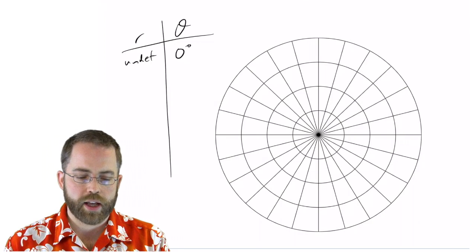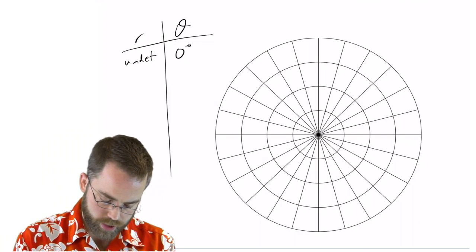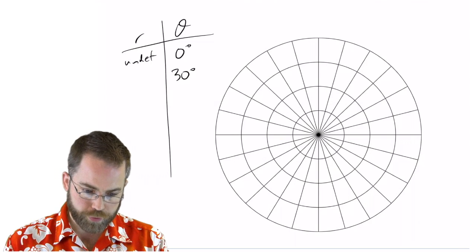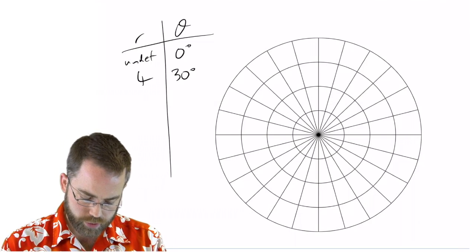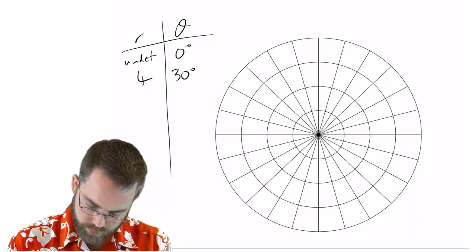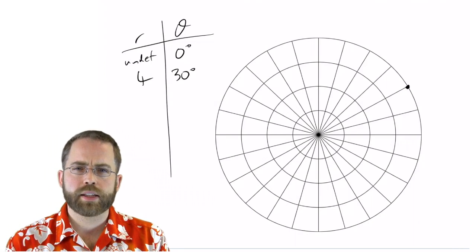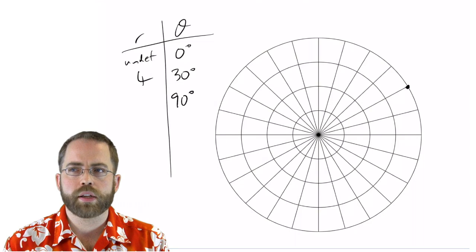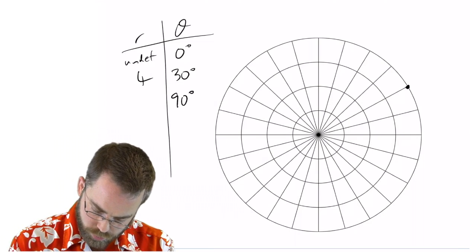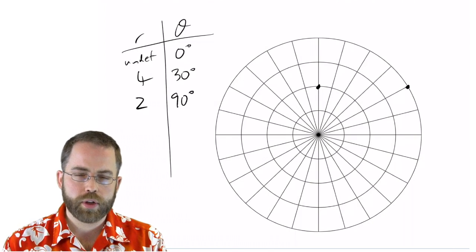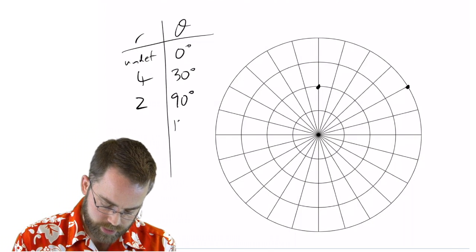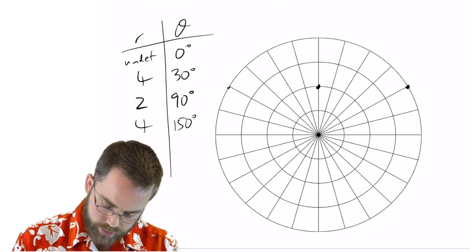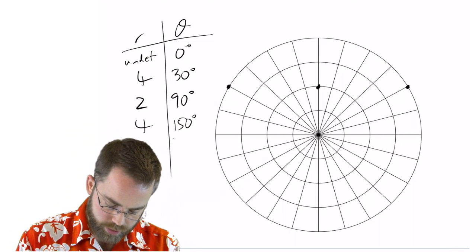But the first nice one is at 30. And so at 30 degrees, sine of 30 is half. 2 over half is 4. At 30 degrees, I need to be out there at 4. So that's up there. And then the next nice coordinate for sine is 90. And sine of 90 is 1. 2 over 1 is 2. So that's doable. And then at 150, it's half. 2 divided by half is still 4. So that's going to be over there like that. And then at 180, we're undefined again.